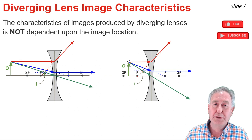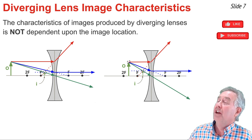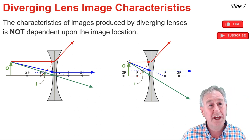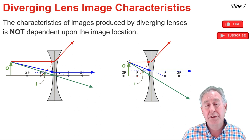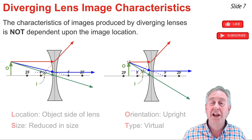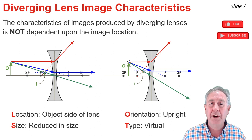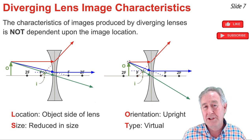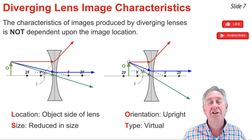Once you draw the ray diagrams, you can apply the LOST art of image description. Here are the two ray diagrams we drew — on the left, the object is a considerable distance from the lens; on the right, it's considerably closer. In each case, the characteristics of the images are the same. The location is on the object side of the lens between the focal point and the lens. The orientation is upright, the size is reduced, and the type is virtual since the refracted rays are diverging after exiting the lens.